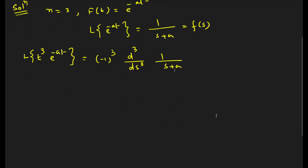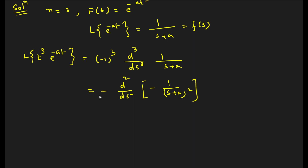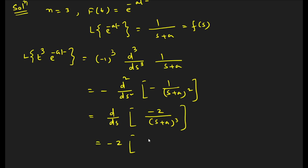Since (-1)^3 gives a minus sign, we have -d³/ds³ [1/(s+a)]. Differentiating once: -1/(s+a)². Differentiating again: 2/(s+a)³. Keeping the -2 factor outside, differentiating once more gives -3/(s+a)^4, so overall we get 6/(s+a)^4. Therefore, L{t³ e^(-at)} = 6/(s+a)^4.